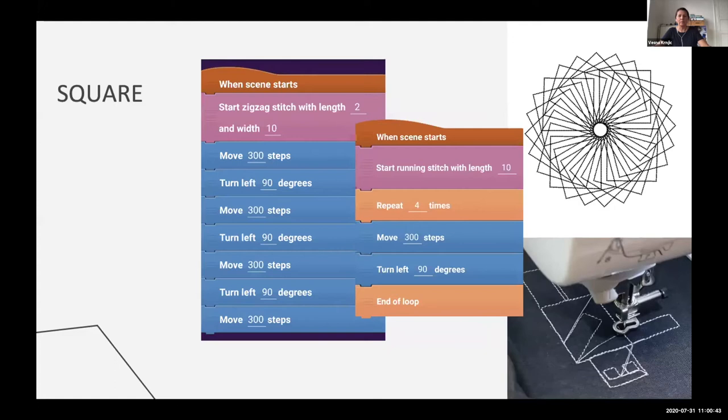Then for example, we teach how do you draw a square? So a square, you can draw a line, then you need to turn in a direction. Then we teach about degrees and so on. So they learned, okay, I need to turn left 90 degrees. Then we also teach, of course, loops and so on.